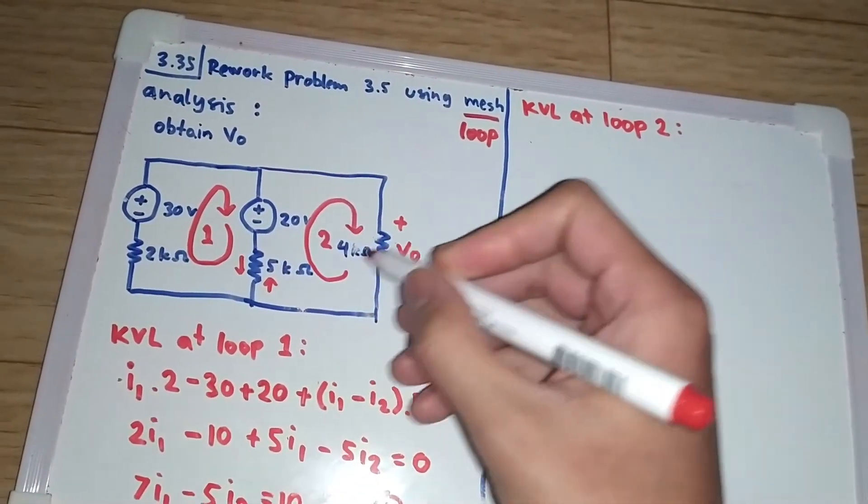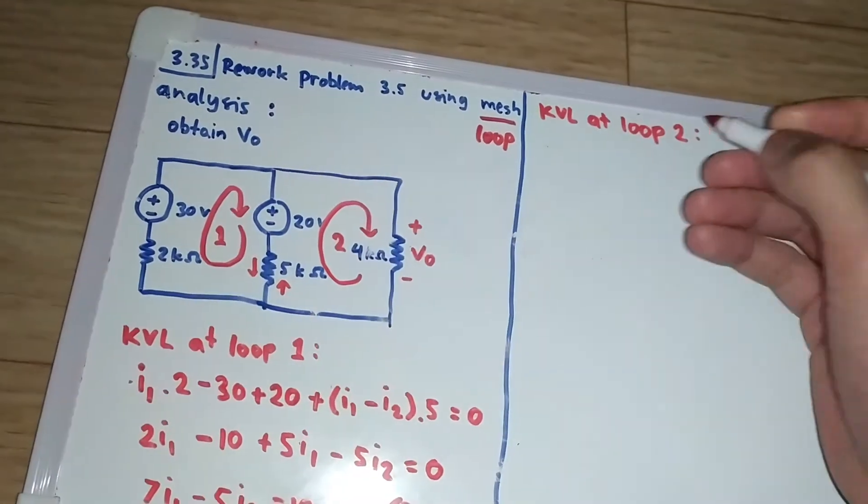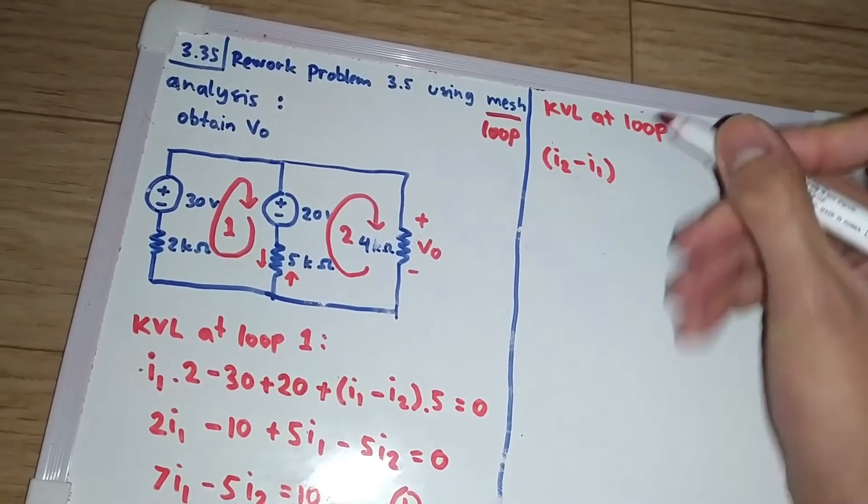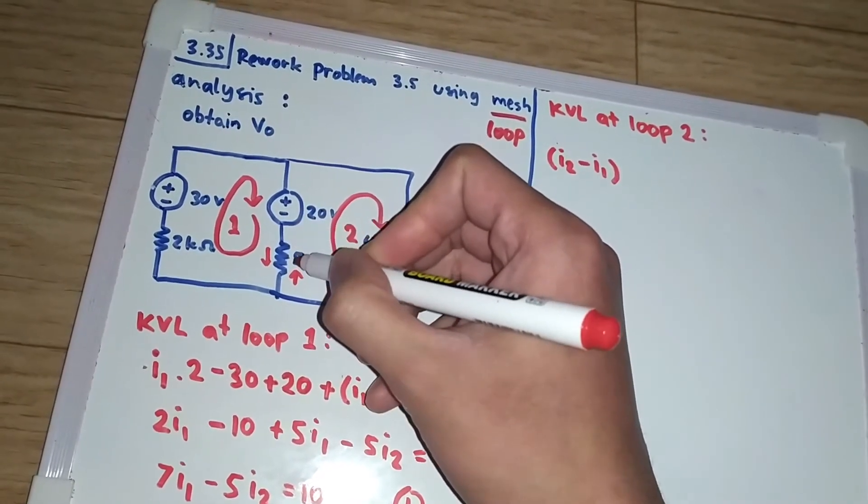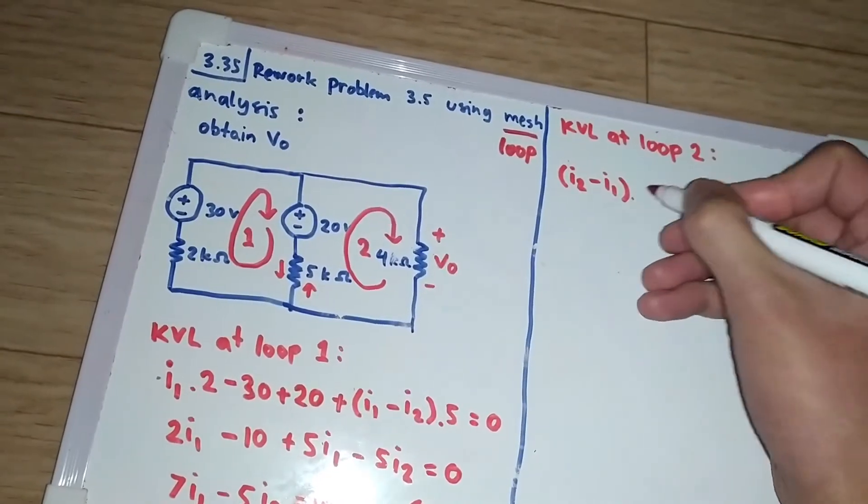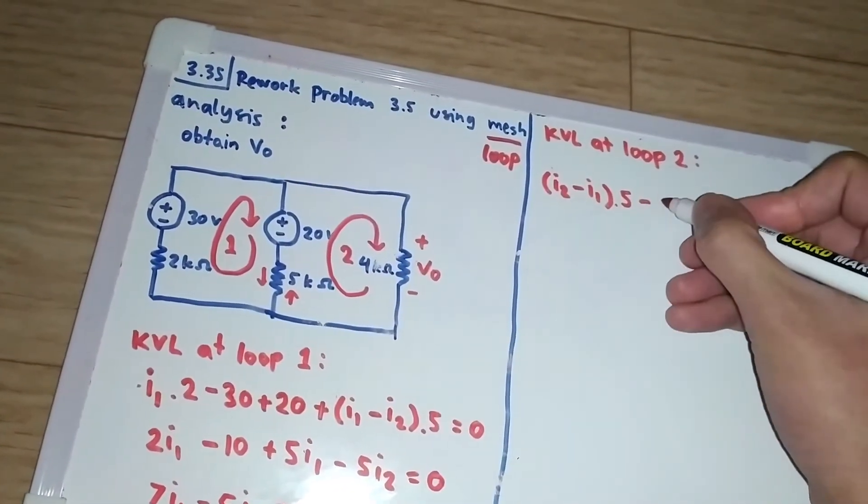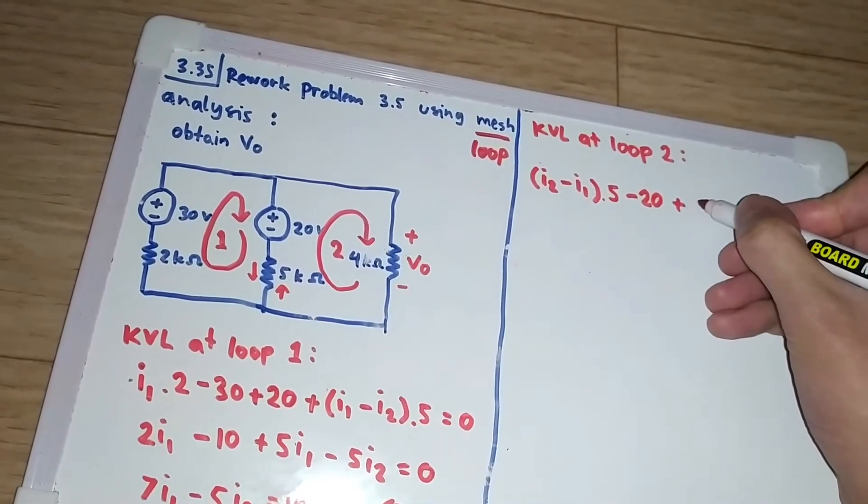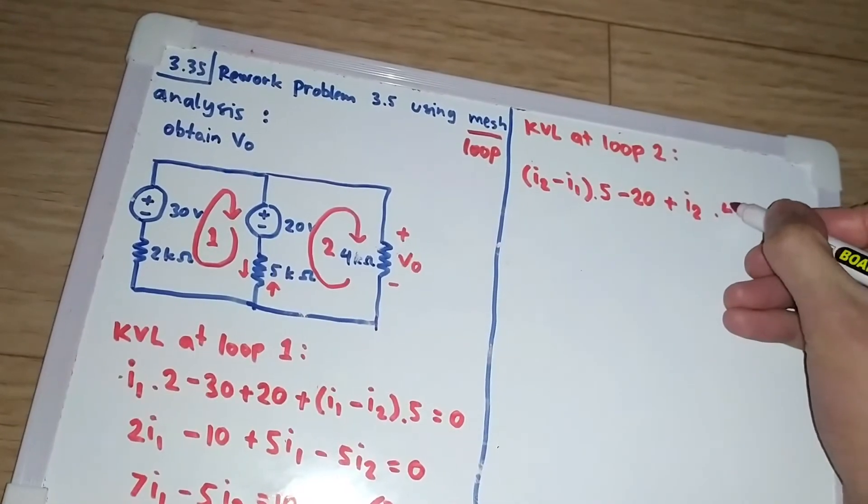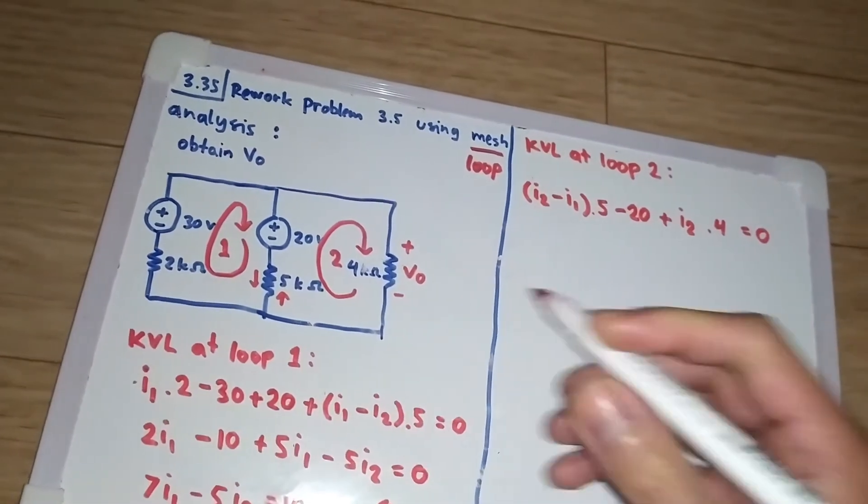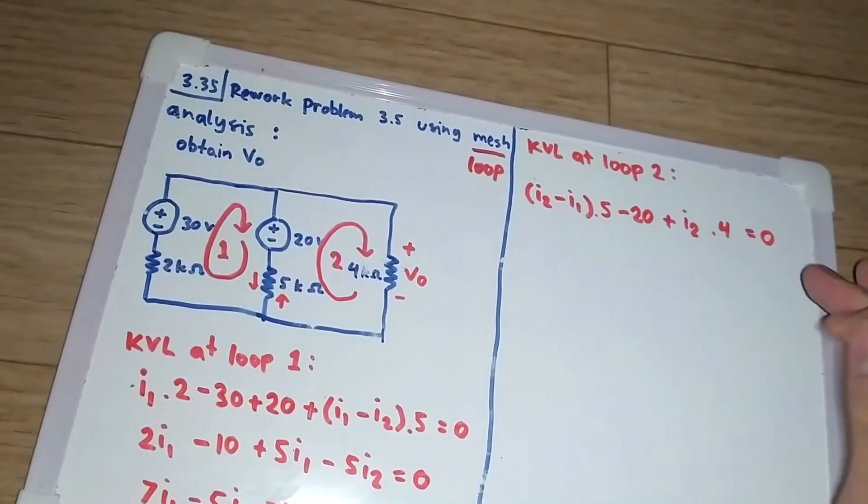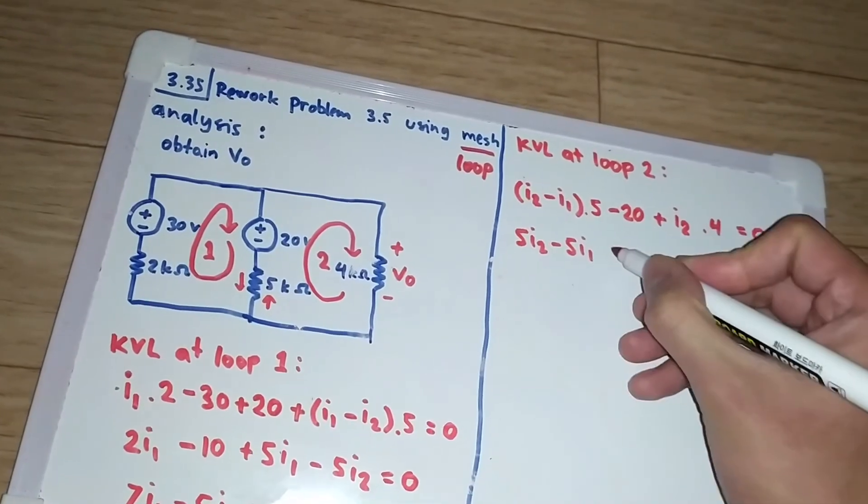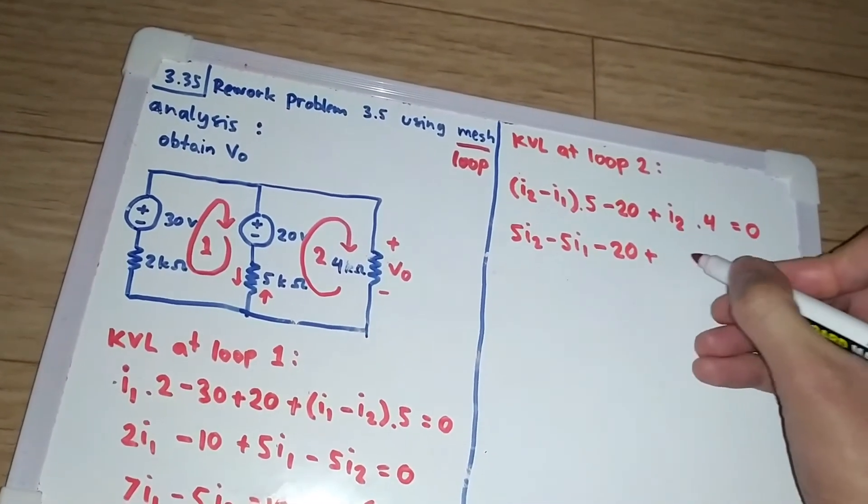We will start from here. This is I2 going there, but we also have I1 going here, so we will have I2 minus I1 times 5. And this part, because we have the negative sign that we encounter in our direction, so we subtract it by 20. And then plus I2 times 4, and this will equal 0.